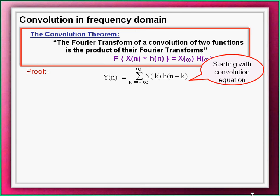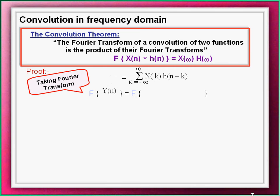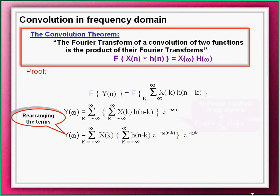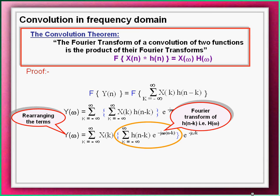To compute the proof of this statement, let us start with the discrete convolution equation, taking the Fourier transform of both input and output. Substituting the definition of Fourier transform into the equation and then rearranging the terms. The middle term is nothing but the Fourier transform of h of n minus k signal.